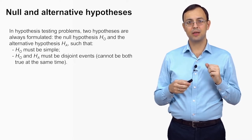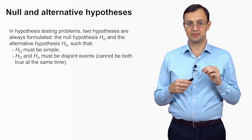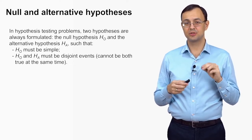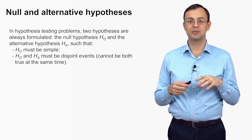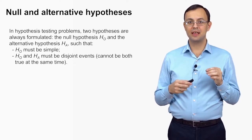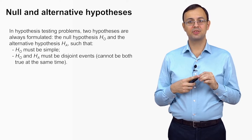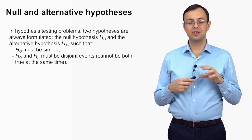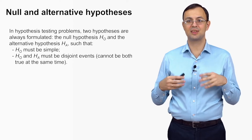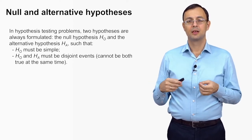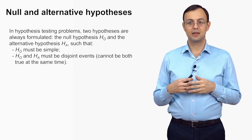In all hypothesis testing problems, we must formulate two hypotheses — not just the one we want to test, but a pair. One is called the null hypothesis and the other is called the alternative hypothesis. They must meet two conditions: the null hypothesis must be simple, and the two hypotheses must be mutually exclusive — they cannot both be true at the same time. The symbols typically used are H₀ and Hₐ.